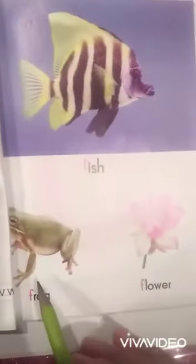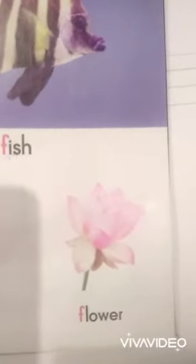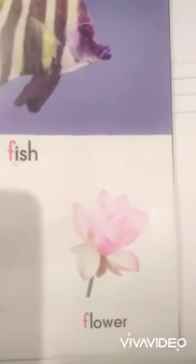And what is this? This is frog. F frog. And this is floor. Floor. What is this? Floor. F floor, F fish, F frog, F floor.